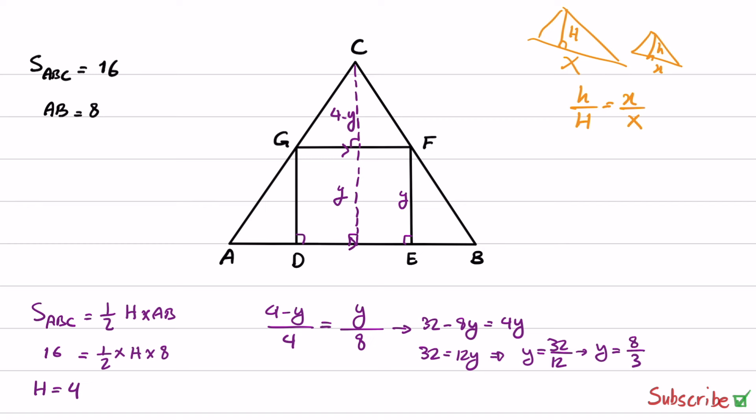Now, we have the side and we can obtain the area of the square as side squared. And from this, S is equal to 64 over 9.